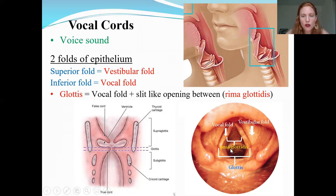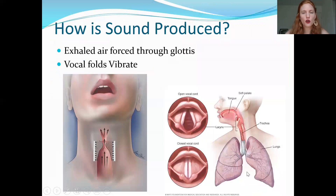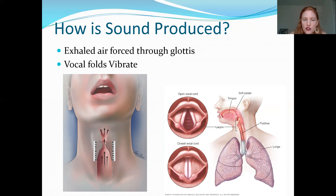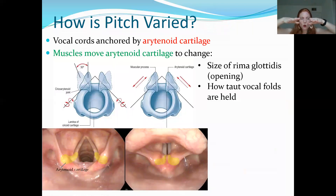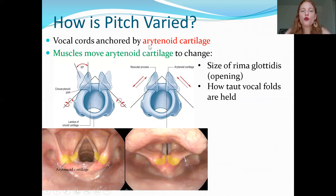The vocal folds plus the rima glottidis together make up the glottis. The epiglottis — 'epi' meaning above — sits above the glottis and protects the opening of the trachea. As air is forced up through the glottis, it creates vibrations in the vocal cords. When the cords are loose they make lower pitches, and when held tighter they make higher pitches. The tightness and angle of the vocal cords is controlled by muscles anchored to the arytenoid cartilages.